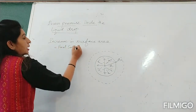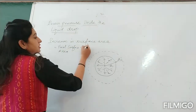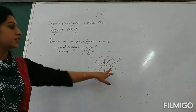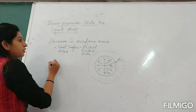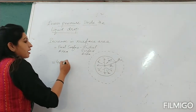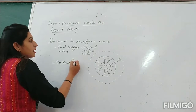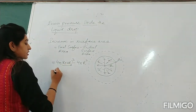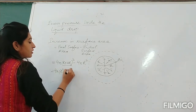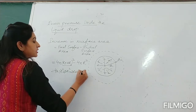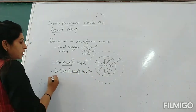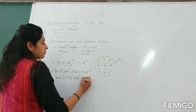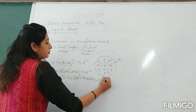Increase in surface area equals final surface area minus initial surface area: 4π(R + δr)² − 4πR². When you open the bracket it becomes 4π(R² + δr² + 2R·δr) − 4πR². Opening the bracket gives 4πR² + 4πδr² + 8πR·δr − 4πR².